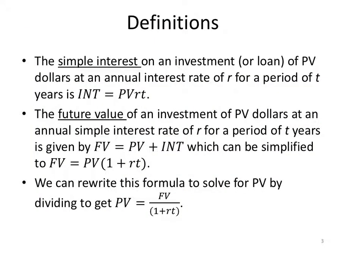So let's start with some definitions. First of all, the simple interest on an investment or a loan of PV dollars at an annual interest rate of R for a period of T years is INT equals PV times R times T. Now, keep in mind this PV is a single variable. This is present value. So it's the amount that we invested, the present value of the investment multiplied by the rate, multiplied by the time, always time in years, will give us our simple interest.